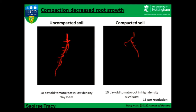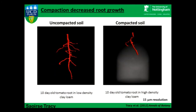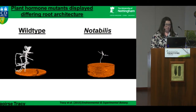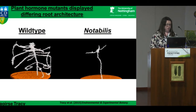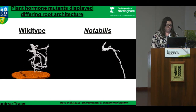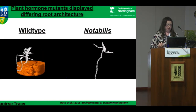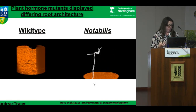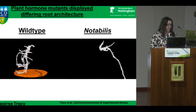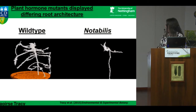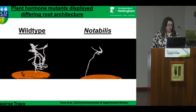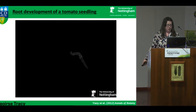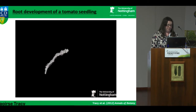These were two ten-day-old tomato plants grown on clay loam soil at different bulk densities. The plant growing in compacted soil had far fewer lateral roots, attained a shallower depth, and had thicker roots. The consequences this would have for productivity or field crop lodging would be significant. ABA — the plant hormone abscisic acid — was suggested to be heavily involved in maintaining root growth in suboptimal soil conditions, so another experiment looked at the response of ABA mutants to root architecture. This work was in collaboration with Ian Dodd at Lancaster.